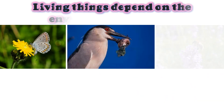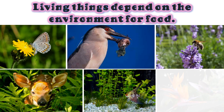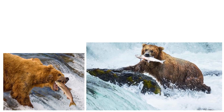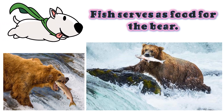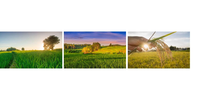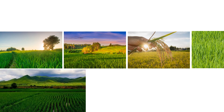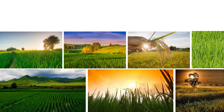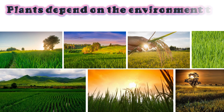Living things depend on the environment for food. Plants and animals are sources of food for other animals. Fish serves as food for the bear. Plants depend on the environment — getting carbon dioxide, sunlight, and water — in order to make their own food.